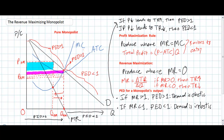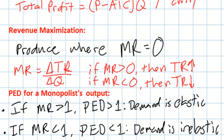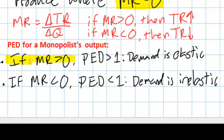So this lesson went through three different characteristics of a purely monopolistic market. First, the profit maximization rule: a firm should produce where marginal revenue equals marginal cost to maximize total profits — this rule applies to any market structure, whether perfect competition, pure monopoly, or something in between. Second, the revenue maximization rule: a firm wishing to maximize total revenues should produce where marginal revenue equals zero. Third, using the total revenue test, when marginal revenue is greater than zero demand is elastic, since a decrease in price leads to a greater percentage increase in quantity demanded, raising revenues.